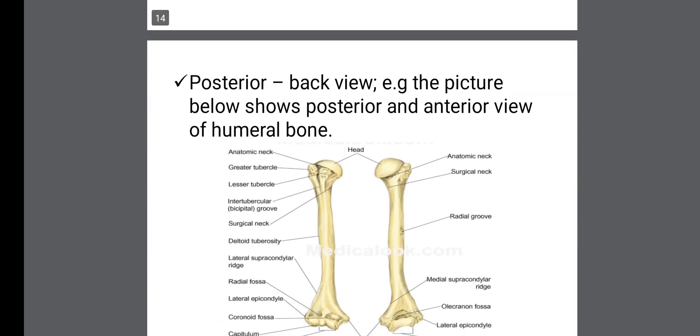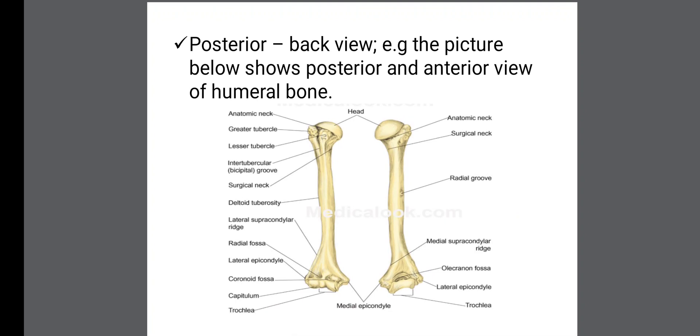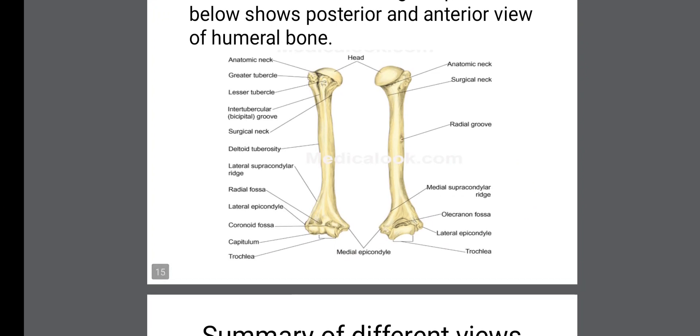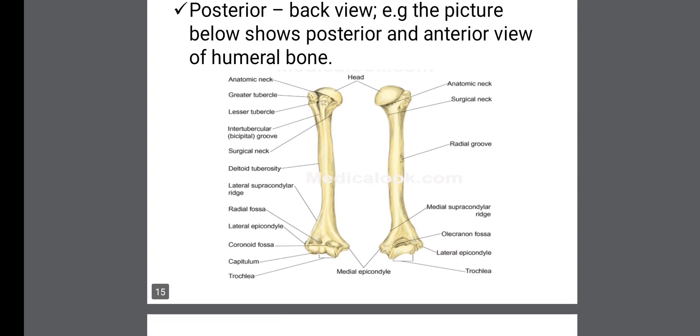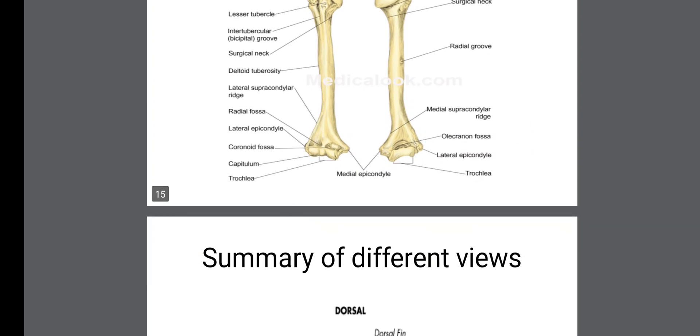The last but not the least is the posterior view. The posterior view is also known as the back view. Example I have here is the picture showing the posterior view of the humerus, of the humeral bone. I have a humerus bone and I have the diagram of the front view and the back view. That's the anterior view and the posterior view of the humerus bone.